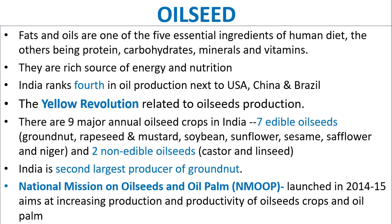Fats and oils are one of the five essential ingredients of human diet, the others being protein, carbohydrates, minerals and vitamins. They are a rich source of energy and nutrition. India ranks fourth in oil production, next to USA, China and Brazil.